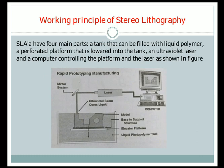The stereolithographic process has four main parts: a tank that can be filled with liquid polymer, a perforated platform that is lowered into the tank, an ultraviolet laser, and a computer controlling the platform and laser, as shown in the figure.